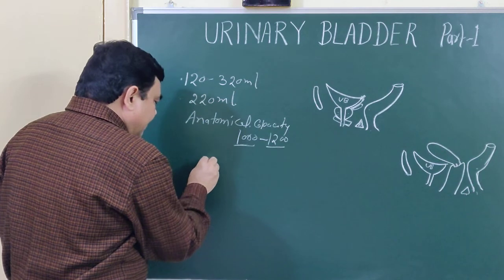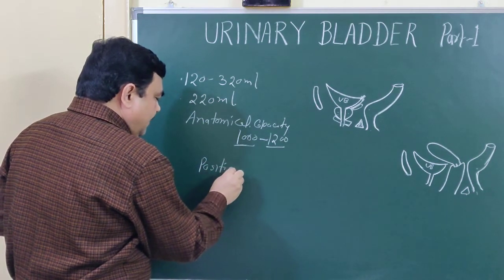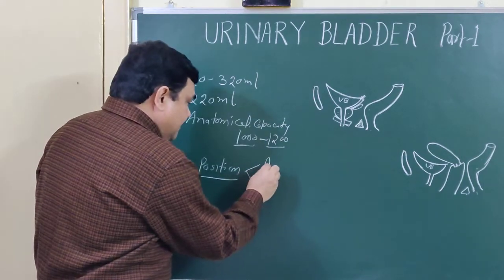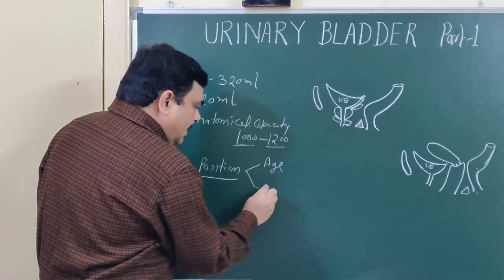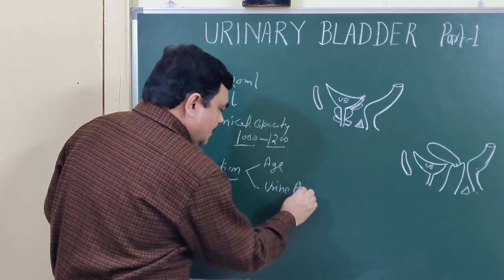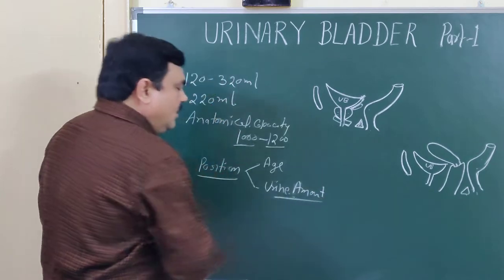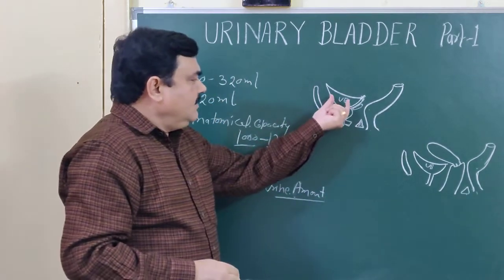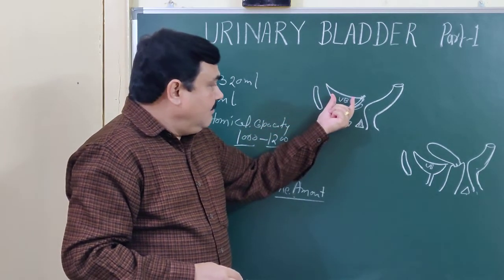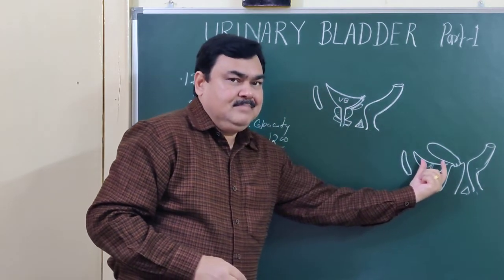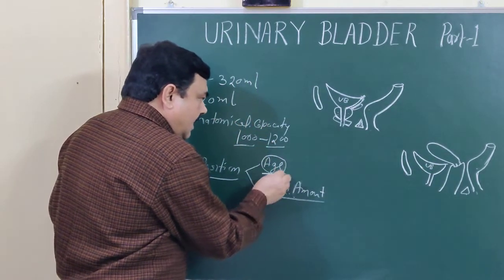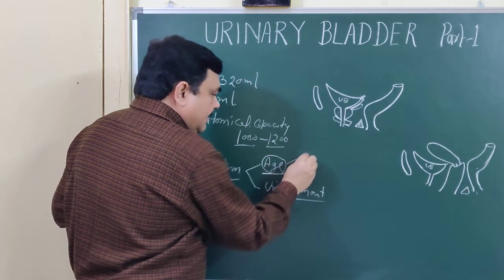Regarding the position of the urinary bladder — if you see the position, it varies with age and the amount or volume of urine. Here in this diagram, this is the position of the urinary bladder in male and in female, in the pelvic cavity. In adults, this is the adult position.